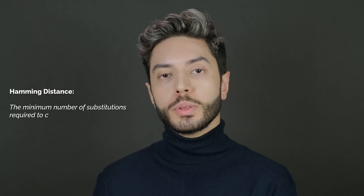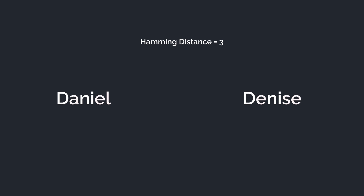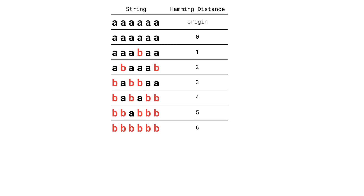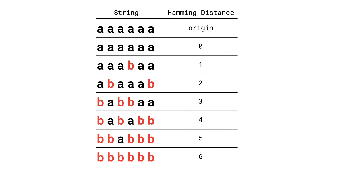There are many fuzzy search algorithms. As an educational example, let me show you a very simple one called Hamming distance. Given two strings with the same length, the Hamming distance between them is the minimal number of substitutions required to change one string into the other. For example, the Hamming distance between 'Daniel' and 'Denise' is three, because we would have to change three letters for them to match. We could implement a fuzzy search mechanism that calculates the Hamming distance between the search keyword and all the possible results, and then sort the results showing the ones with the lowest Hamming distance first.